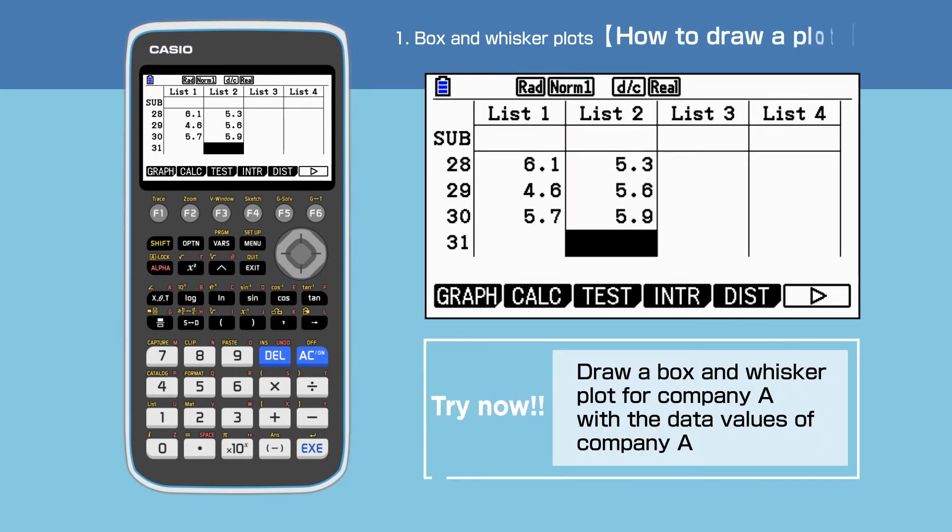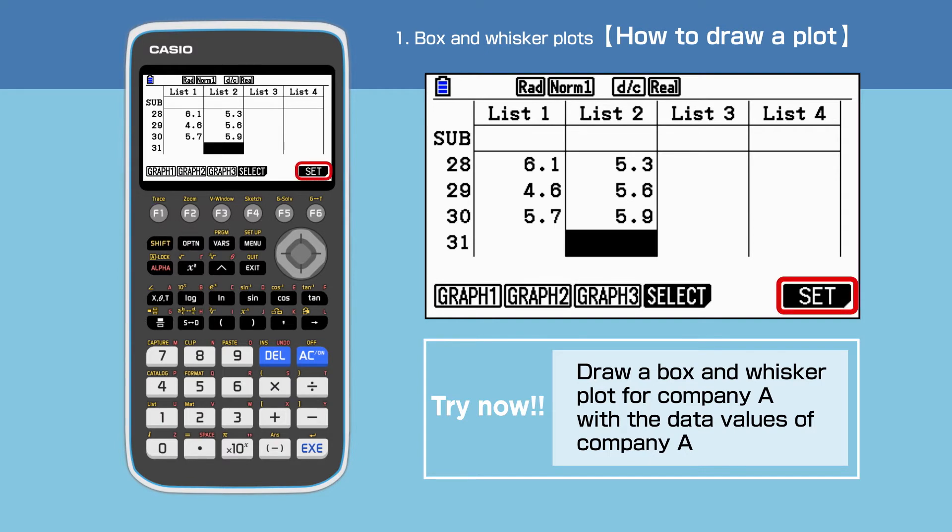We will draw a box and whisker plot to analyze the data for company A first. Press F1 to select graph, then F6 to open the setup screen.